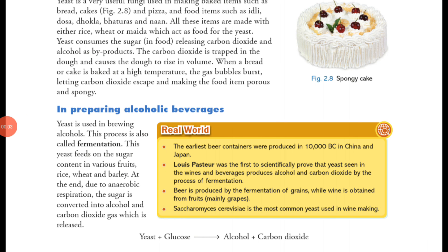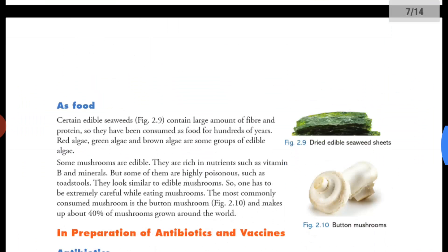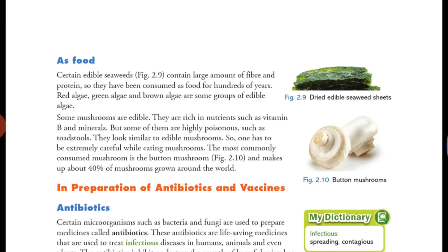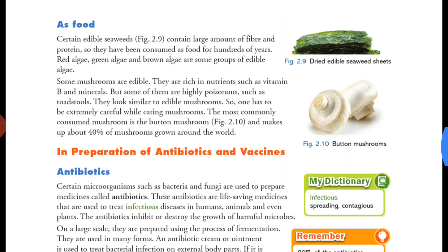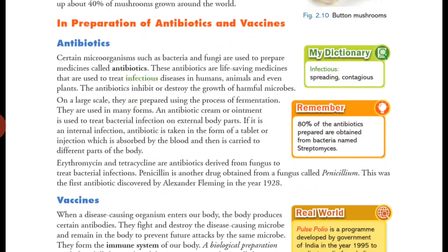Good morning students. Yesterday we discussed the use of microorganisms in preparing alcohol beverages — we covered the fermentation process, gathered information, and also studied mushrooms and seaweeds as food. After that, we covered how microorganisms help in making antibiotics and vaccines, starting with the first antibiotic penicillin.